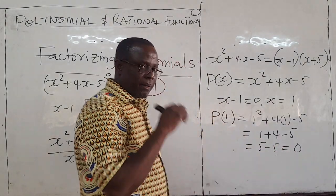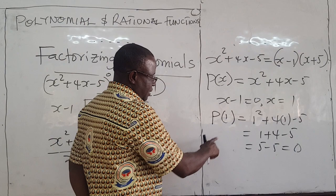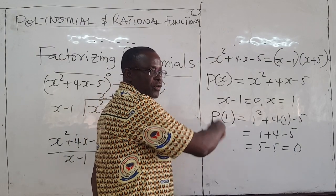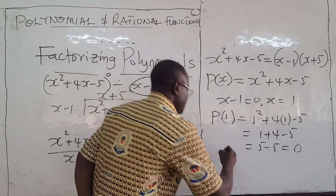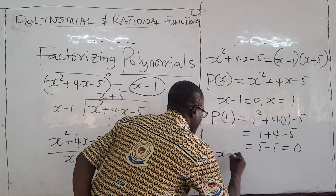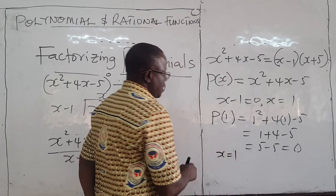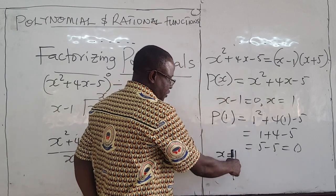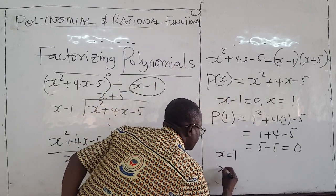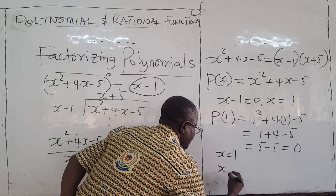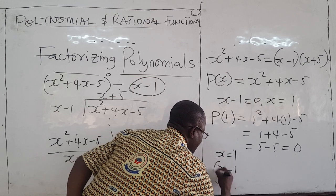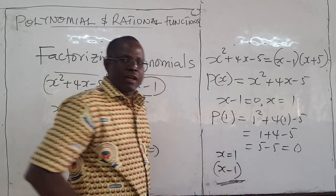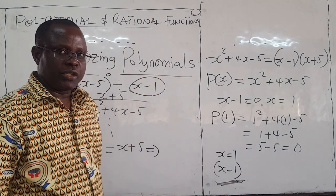So we say: if there is an element that makes the polynomial go to zero — if x equals 1 causes the polynomial to go to zero — then x minus 1 becomes a factor of the polynomial.